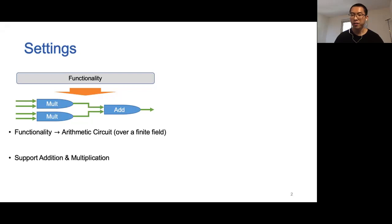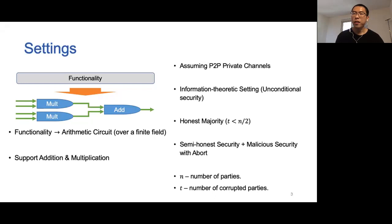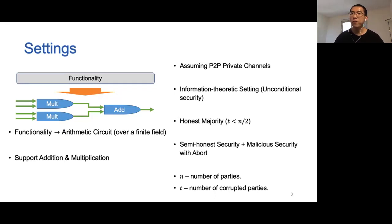The circuit supports addition and multiplication operations. In this work, we focus on the information-theoretic setting with honest-majority and assume a P2P channel between every pair of parties. We are interested in both semi-honest security and malicious security with abort. We use n for the number of parties and t for the number of corrupted parties.